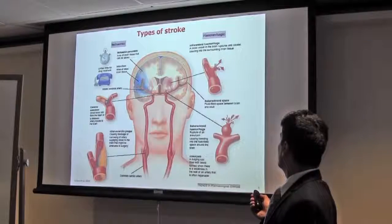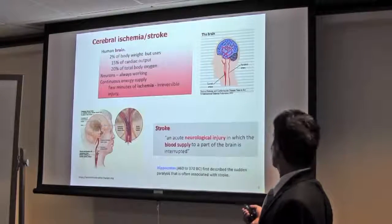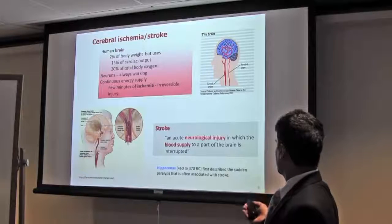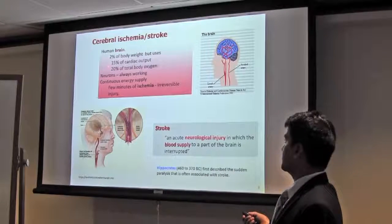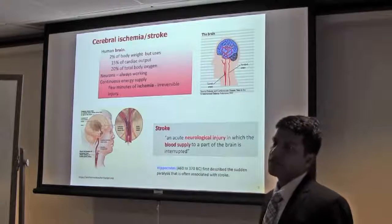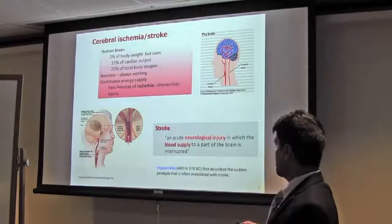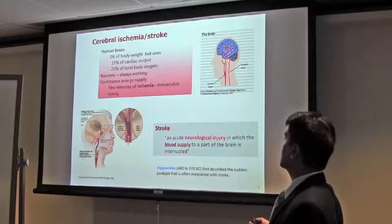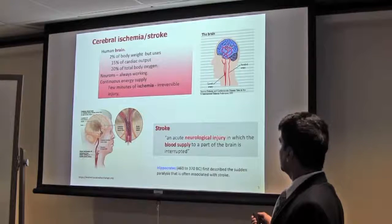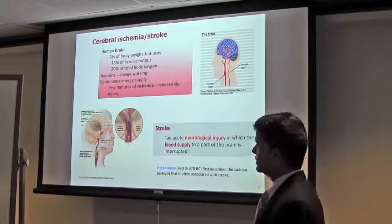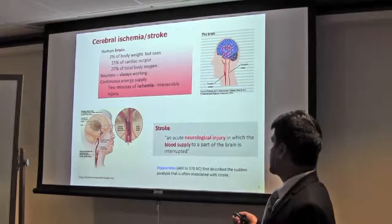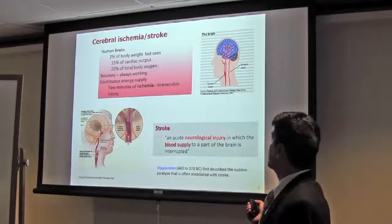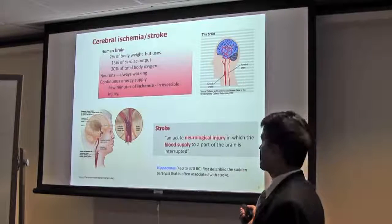The human brain is only 2% of body weight, but it takes 15% cardiac output and 20% of total body oxygen. Because neurons are always working, it needs continuous supply of energy. A few minutes of ischemia makes irreversible injury to the brain; mainly neurons will die.